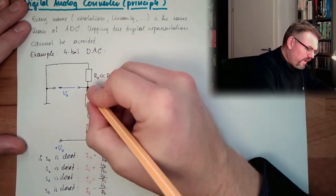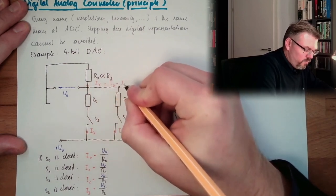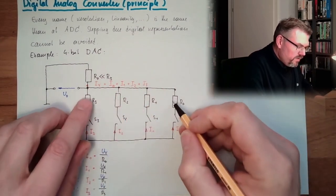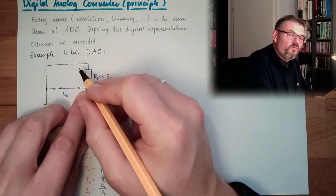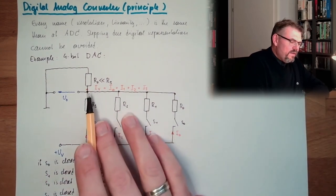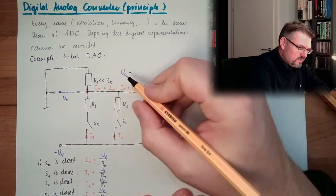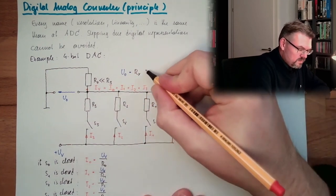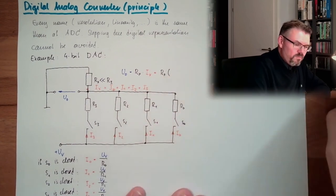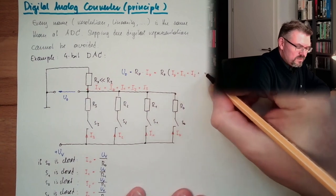And here I have Ix, and this is I0 plus I1 plus I2 plus I3. Because all the currents are reaching this point and this has to go further. So, and here in my output voltage, Uo equals Rx multiplied by Ix. And this is Rx multiplied by I0 plus I1 plus I2 plus I3.